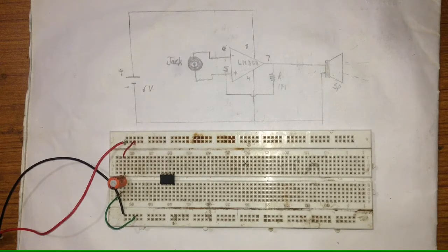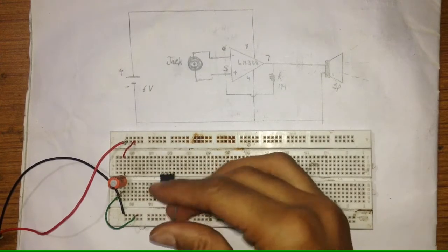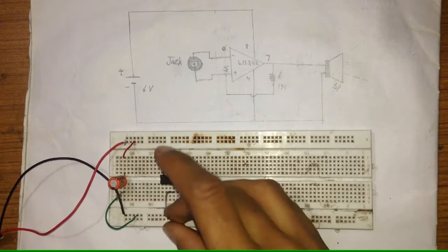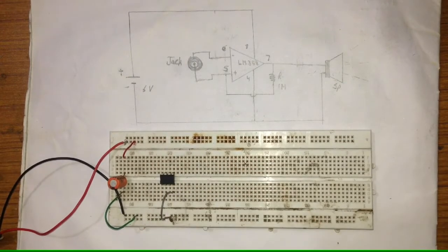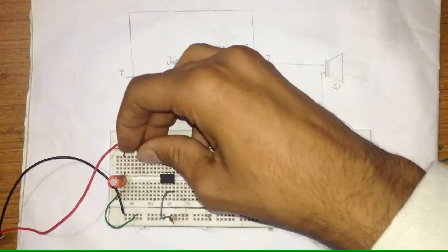Now connect the positive and negative ends here. Pin 4 will be negative, the ground, that is down. And positive will be up here. Here it is.